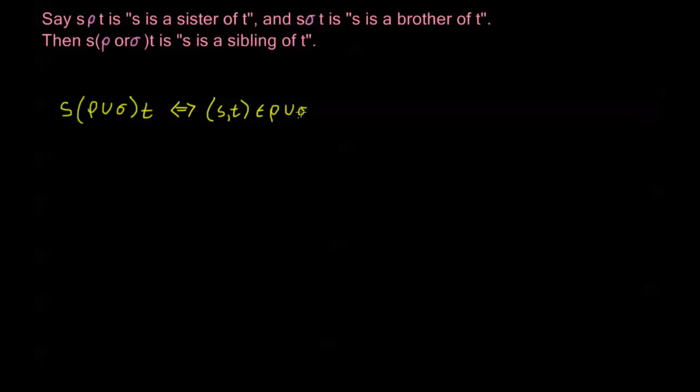Using our sets of ordered pairs to define these relations. Or equivalently I can write s and t satisfy this ρ union σ if s ρ t or s σ t or both. With union we know that we don't care if it's in both, we just need it to be one or the other.